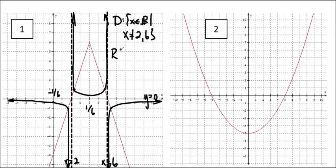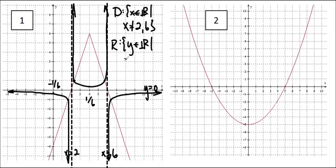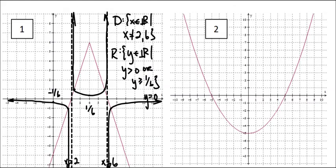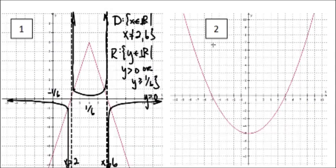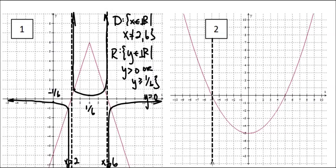I write my domain: x not equal to 2 and 6, because those are my vertical asymptotes. For the range, you have to be a little bit careful — it's in two sections: y less than 0 and y greater than or equal to 1 over 6, because there's a little section in there that I can't touch. So watch out for that. Let's move on to number 2.